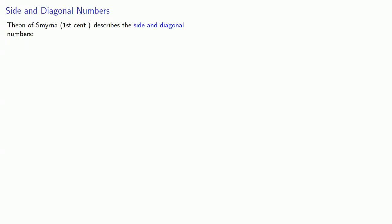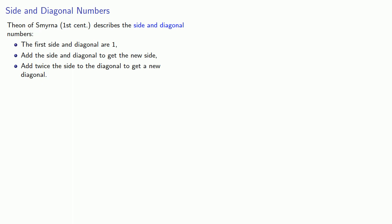The side and diagonal numbers play an interesting role in the history of mathematics. Theon of Smyrna, in the first century, described them as follows: the first side and diagonal are both 1. Then we generate additional side and diagonal numbers by adding the side and diagonal to get a new side, and adding twice the original side and the original diagonal to get a new diagonal, and repeat indefinitely.